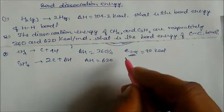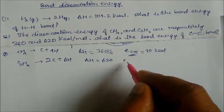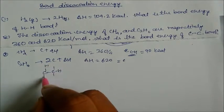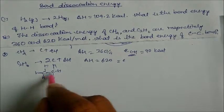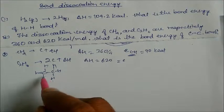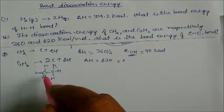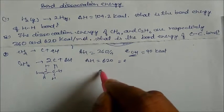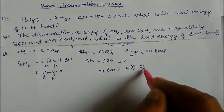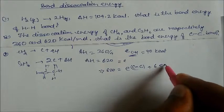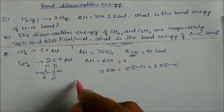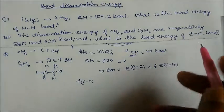For C₂H₆, we have two types of bonds: one C-C bond and six C-H bonds. If you dissociate all bonds, the C-H count is 3 plus 3 equals 6. So 620 equals E(C-C bond) plus 6 into E(C-H bond). We need to find E(C-C bond).